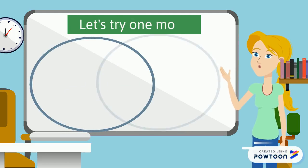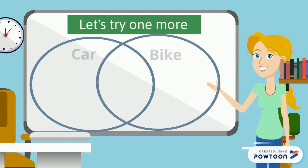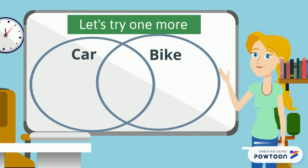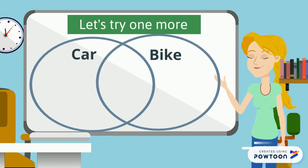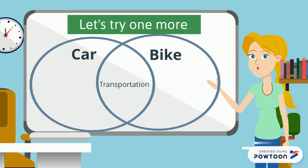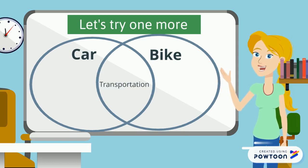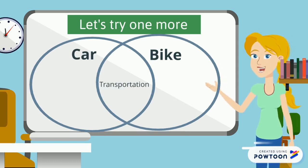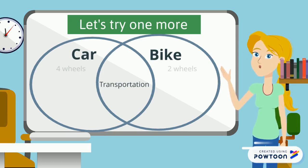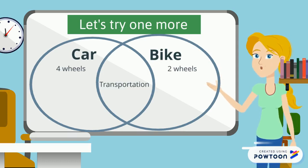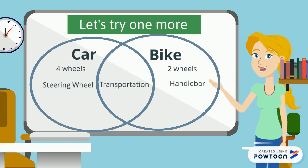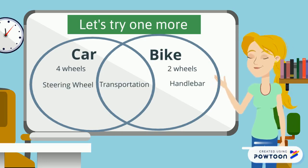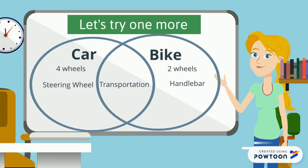Okay, let's try one more: car and bike. Cars and bikes are both used for transportation, so we would put that word in the middle. A car has four wheels — we put it on the car side. Whereas a bike has two wheels — we put it on the bike side. A car has a steering wheel; a bike has a handlebar.